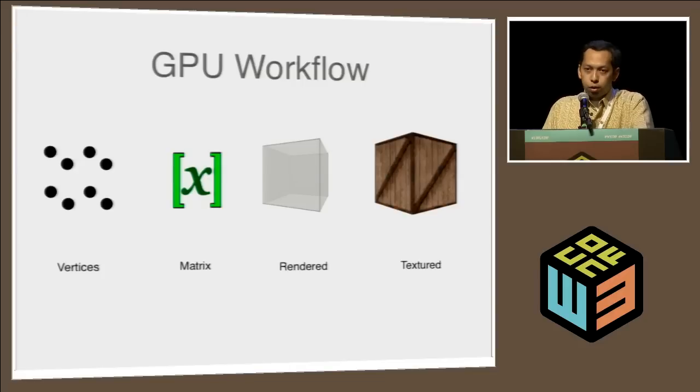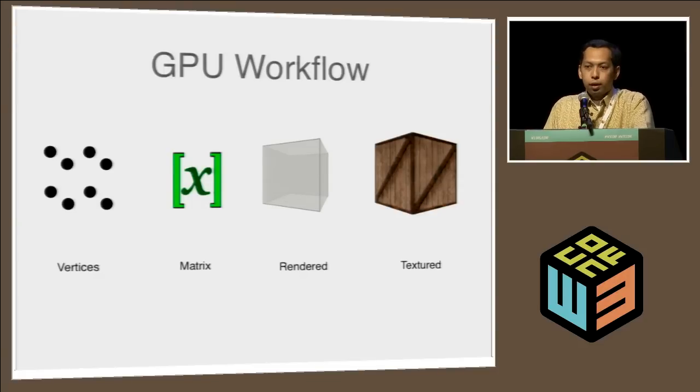A GPU workflow when developing a game is: you prepare some vertices, then say please apply this transformation — it could be a matrix transformation — and then it's rendered to the screen. You probably want to apply some textures, put images on surfaces, and then some lighting and other effects. This is how people use the GPU, and this is manifested in how games are designed — all assets are known upfront.